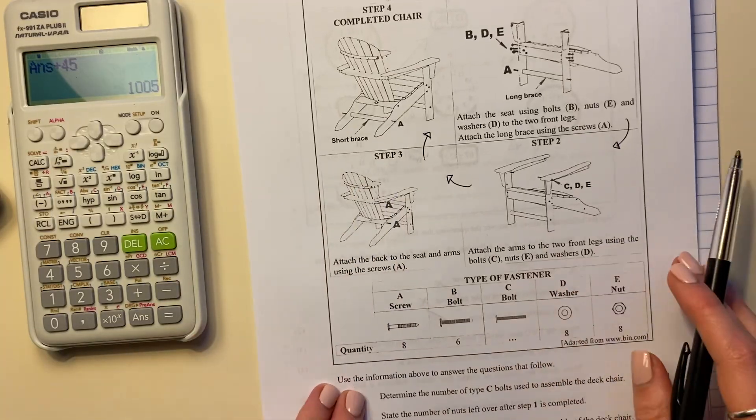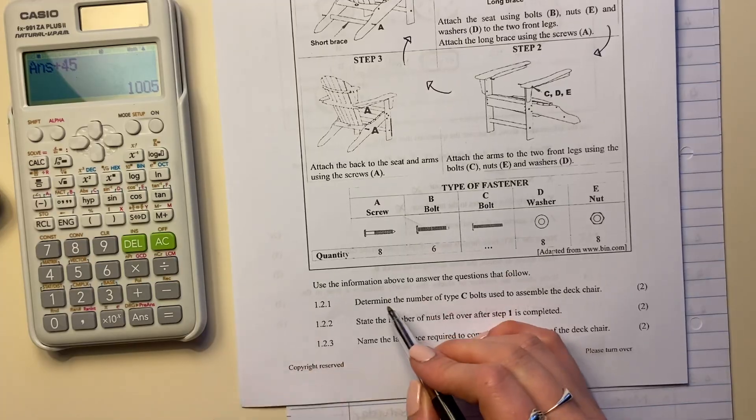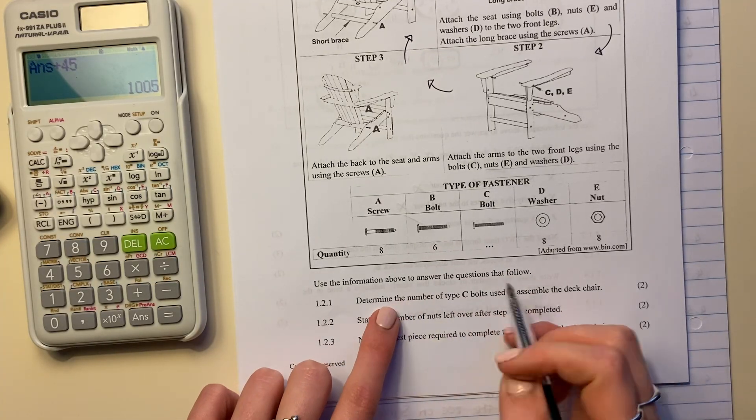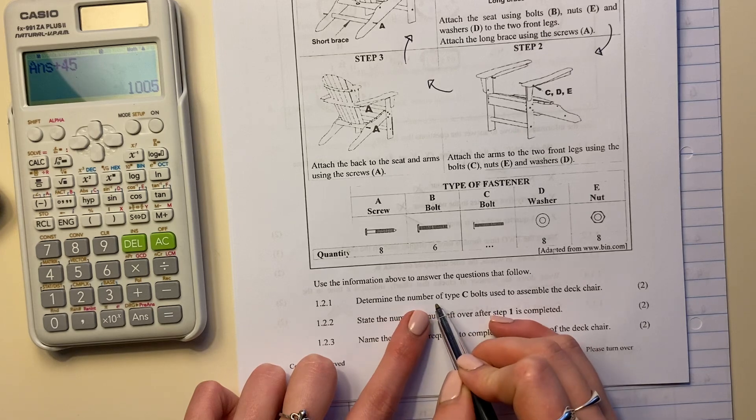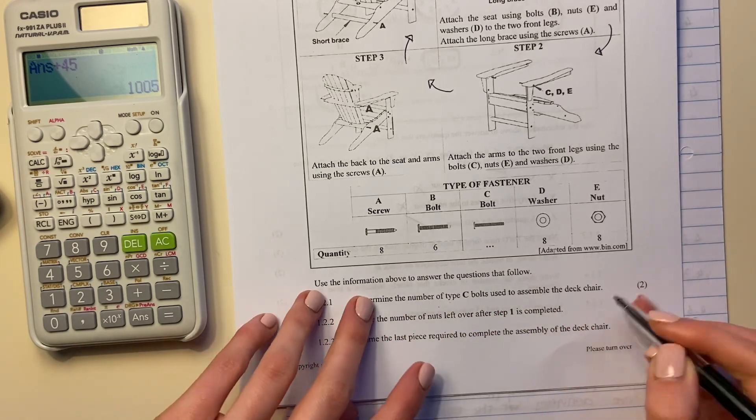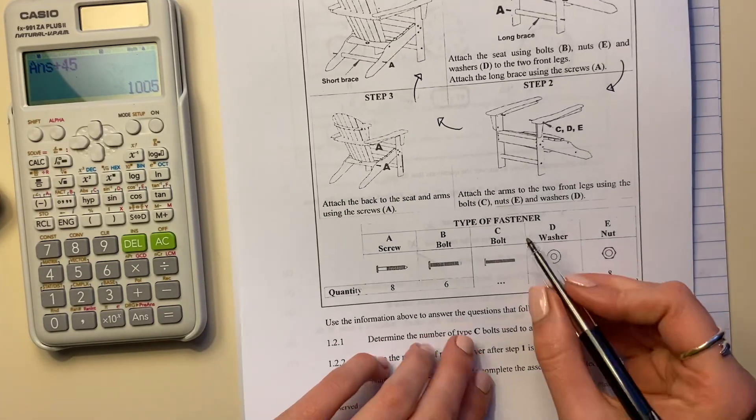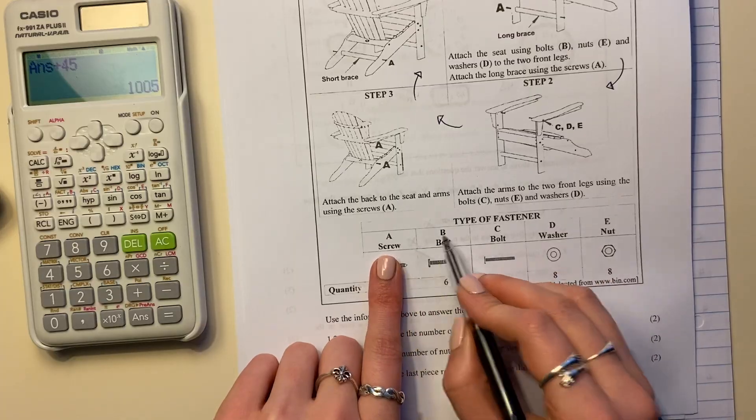So let's start by looking at our questions here at the bottom. The first question says use the information above to answer the questions that follow. It says determine the number of type C bolts used to assemble the deck chair. Now this is quite important because we need to look here and it says A, B, C, D and E.